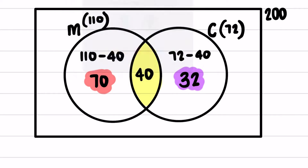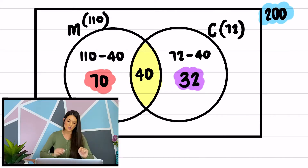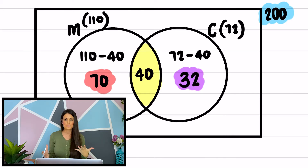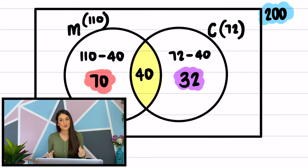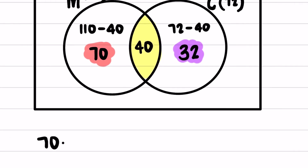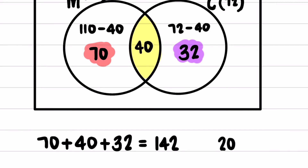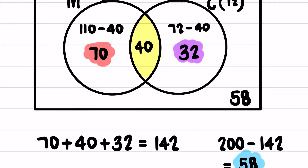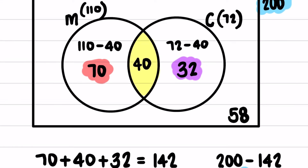There were 200 people in the survey, so we want to know how many don't like milk or cream. We take 70 plus 40 plus 32, which gives us 142, and subtract that from 200: 200 minus 142 gives us 58 people. These 58 people go into the sample space outside the circles — people that don't drink milk or cream. In total within that rectangle we have 200 people.